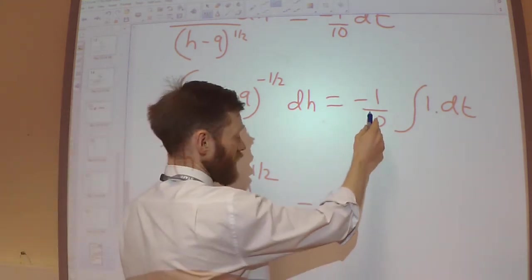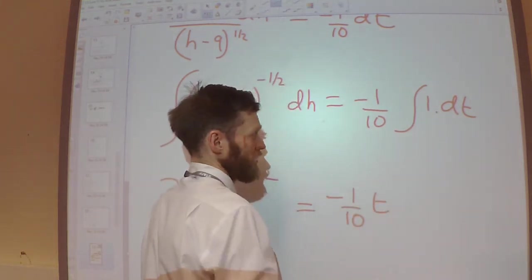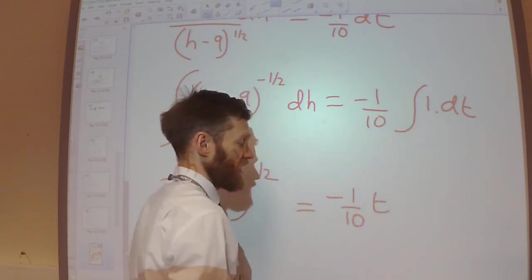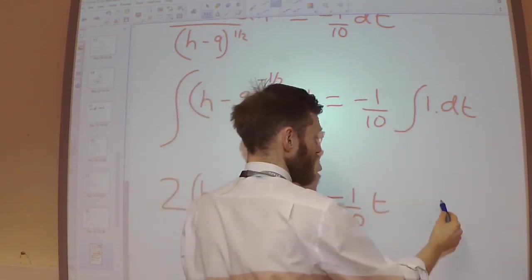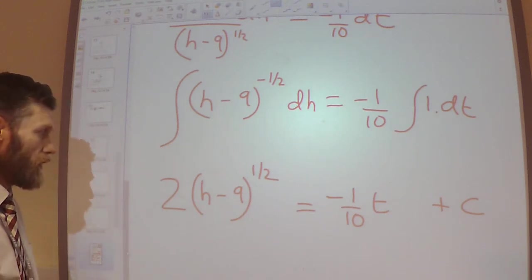Over here, I've got the minus 1 over 10 at the front, multiplied by T, because integrating 1 with respect to T will give me T. And then I've got my constant as well.